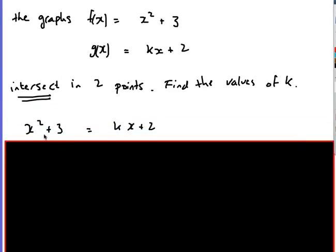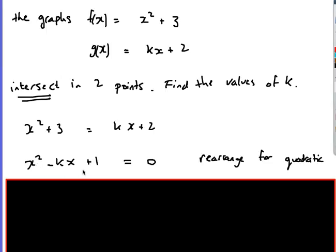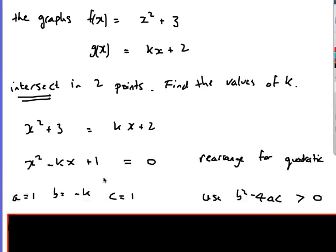Exactly the same as before. Make them equal to each other. They're going to intersect. So this is equal to the other graph. Same again. Rearrange it to make it into a quadratic equal to 0. So bring the minus kx, bring the minus 2 over this side. As before, write down what a, b, and c are. a is 1, b is minus k, c is 1. This time I want greater than 0 because I want two solutions. So b squared minus 4ac is greater than 0.